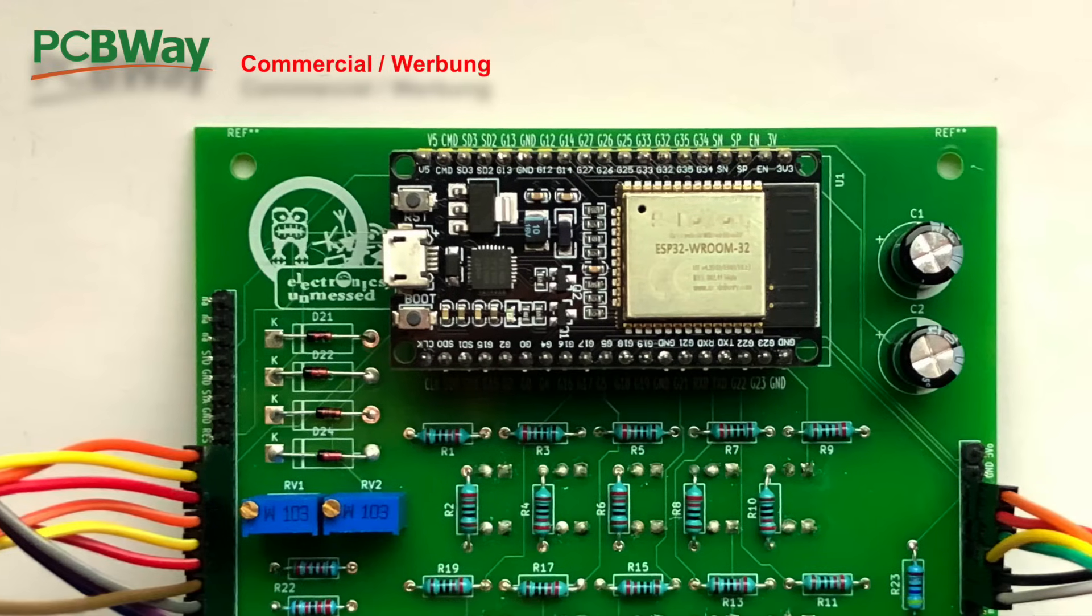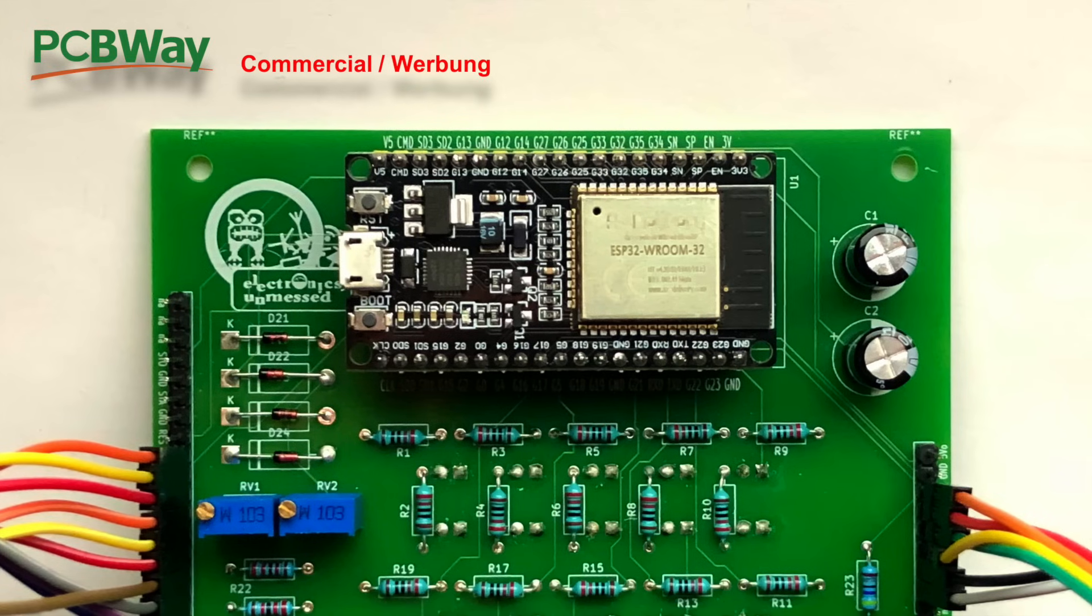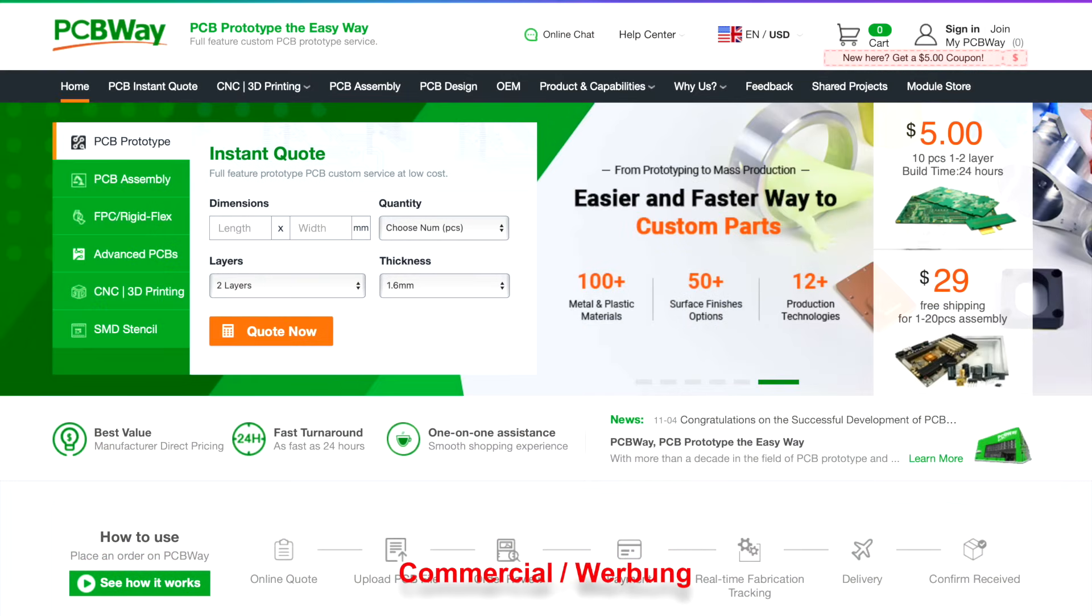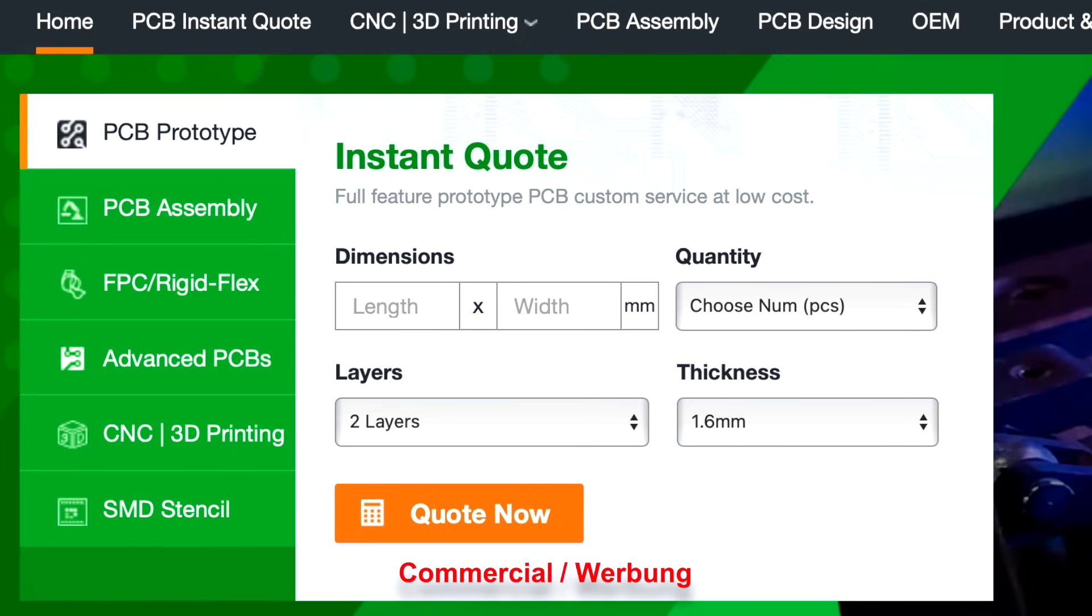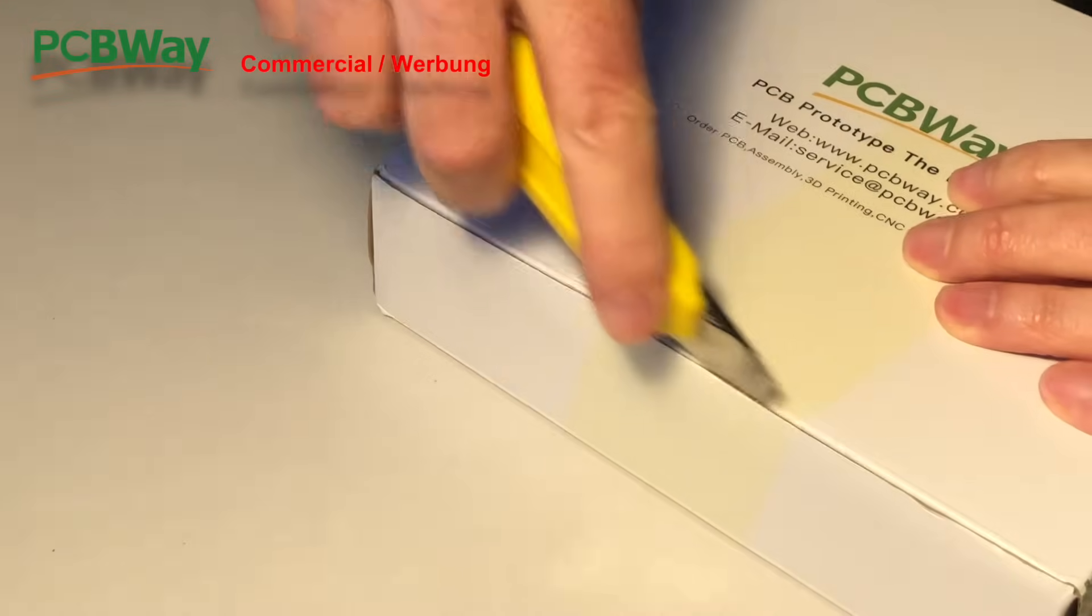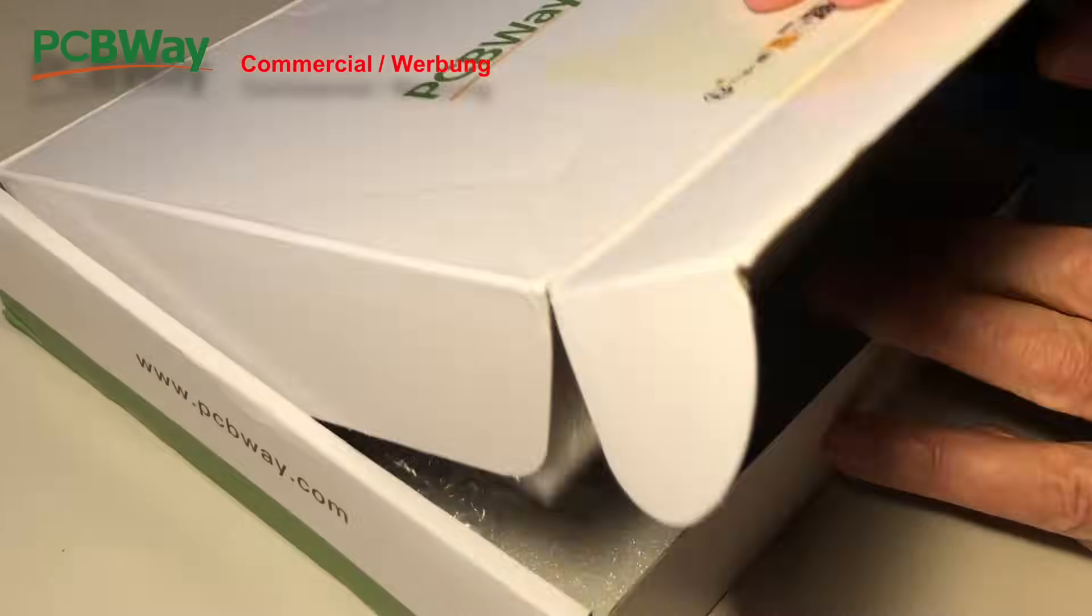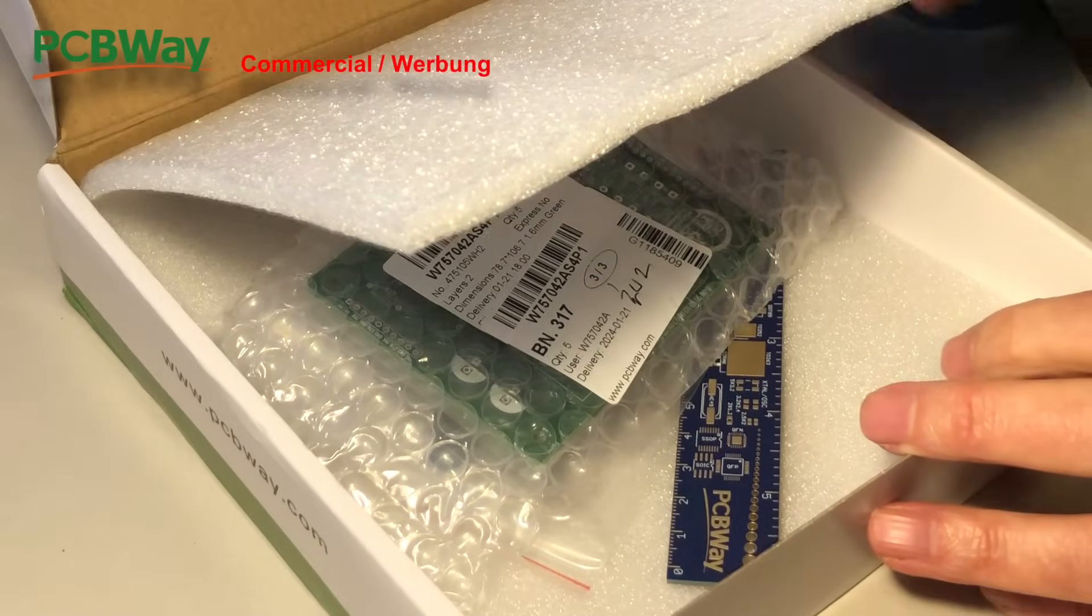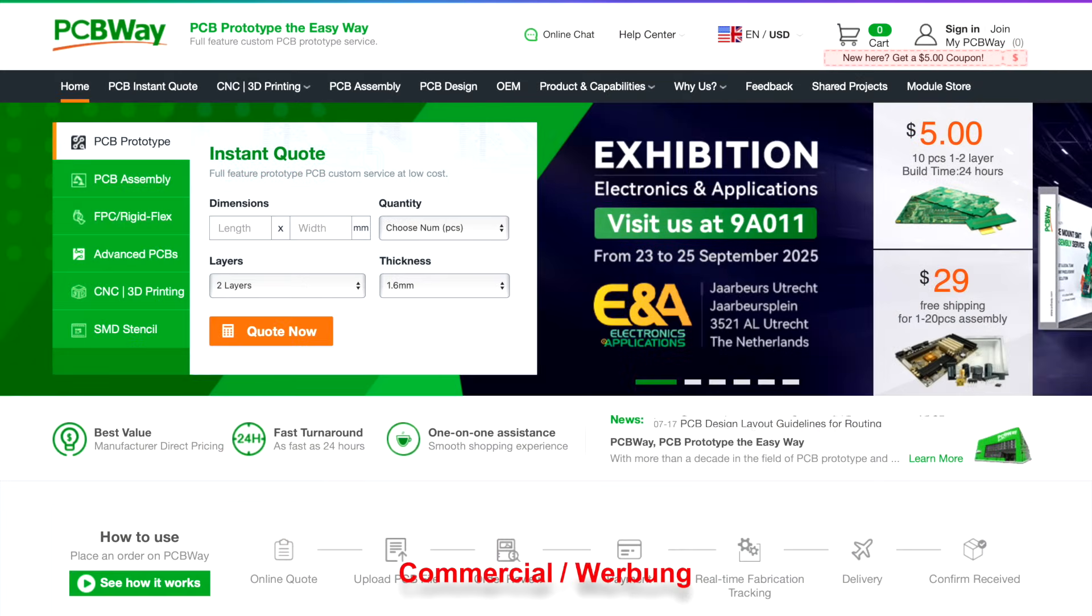Electronics is fun and with professional quality printed circuit boards your projects will be perfect. It's super easy. Just check out PCBWay, the sponsor of this video. Upload your Gerber files, select the type and color of the printed circuit boards and place your order. Production is completed within 24 hours and depending on your shipping option the finished parts will be on your table in no time. Take the easy way with PCBWay.